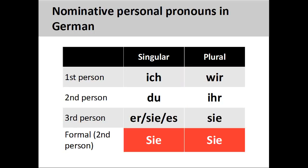Before we go any further, it is important to note that German has a formal form of address, Sie, you sir or you ma'am, which is used with strangers, business associates, acquaintances, and situations outside of the family. As you see on the screen, there are both singular and plural second person forms of this personal pronoun. Both forms are capitalized.